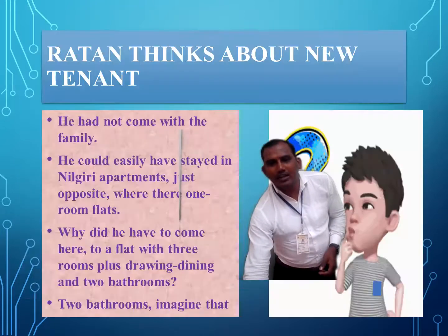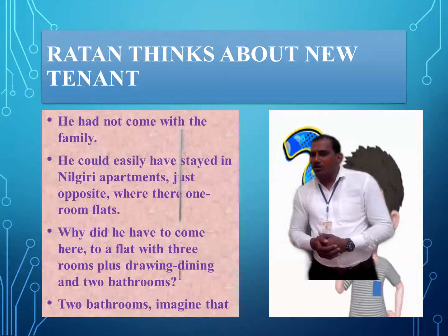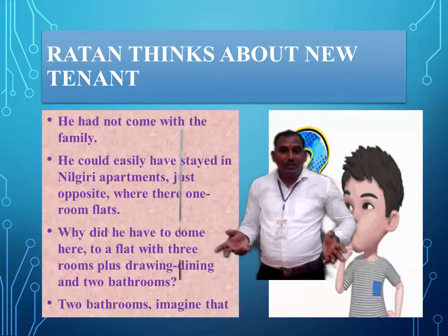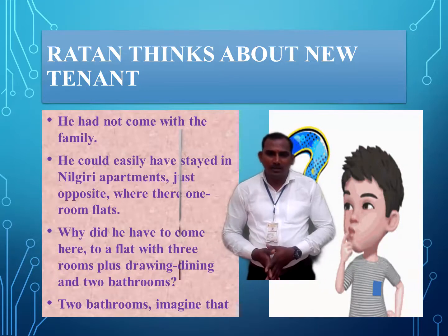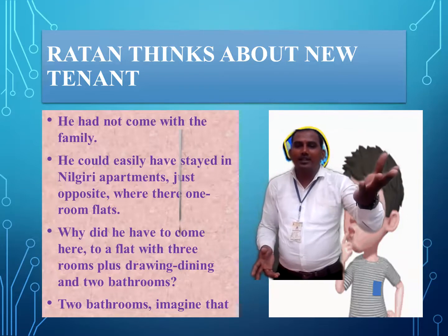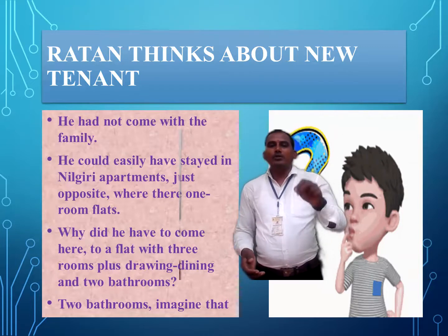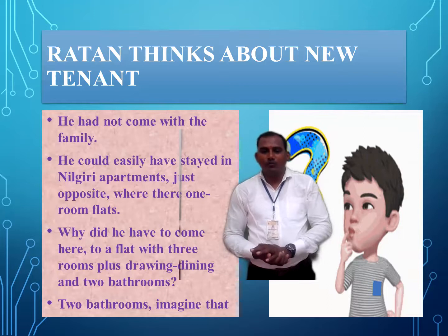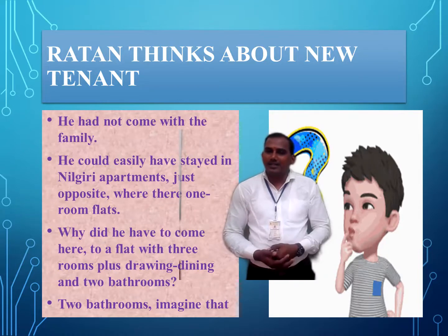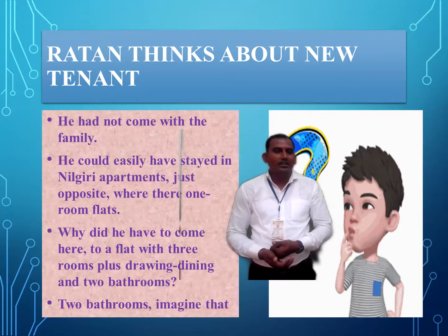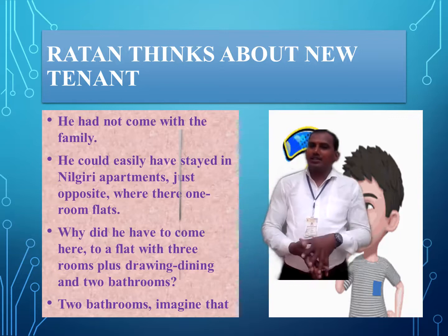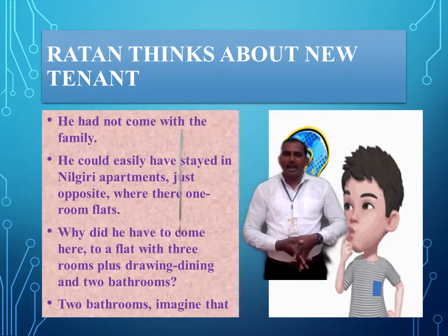Why does Ratan call him a smuggler? Because the new Tenant has taken that flat on rent, and Ratan thinks he had not come with his family. He could easily have stayed in one room nearby, or in the Nilgiri apartment just opposite, where flat rooms are available. But still he chose this flat. That is why Ratan smelt a rat — meaning he got doubts — that the new Tenant is a smuggler. So he thinks he will keep an eye and catch him red-handed.